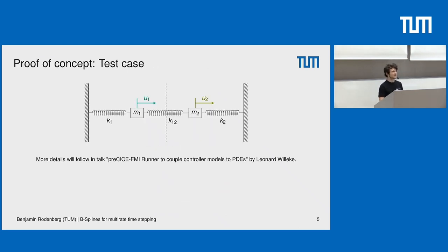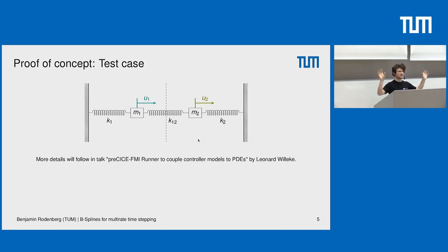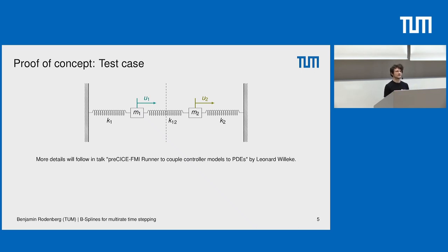My simple test case, used in a recent paper, is this oscillator test case where you have two masses — mass 1 and mass 2 — coupled with one spring. You cut the spring in the middle, giving a very simple example where you can evaluate things like higher-order time-stepping schemes. It's easy to implement and because you have an analytical solution you can also check whether you're breaking things. More details about this case will follow in the afternoon in Leonhard's talk.